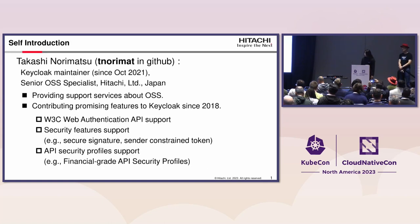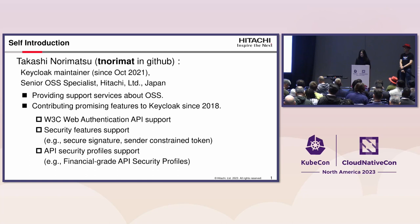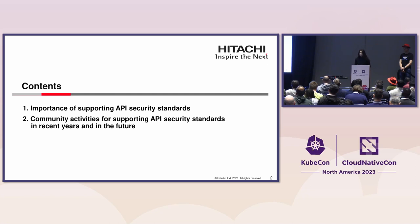Before my talk, let me introduce myself briefly. My name is Takashi Norimatsu, Keycloak maintainer and senior OSS specialist at Hitachi Limited, Japan. I have been contributing many security features to Keycloak since 2018 — for example, W3C Web Authentication API support, Sender-Constrained token support, and API security profile support, more precisely financial-grade API security profiles.